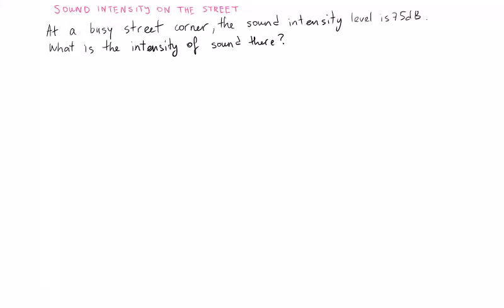At a busy street corner, the sound intensity level is 75 decibels. What is the intensity of sound there? Let's see what's given to us. We're dealing with beta, the sound intensity level, so beta equals 75 decibels. We need to find the intensity.